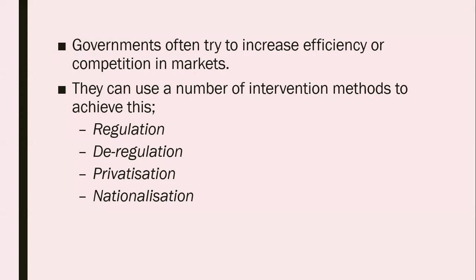There are four main methods. You've got regulation, deregulation, privatisation — which is the focus of this revision video — and nationalisation. Regulation looks at rules and legislation and policies that basically restrict the actions of firms operating in certain markets. Deregulation, on the other hand, looks at reducing some of those rules and regulations. Deregulation reduces the barriers to entry — high levels of regulation act as a barrier which would stop new firms from entering into certain industries.